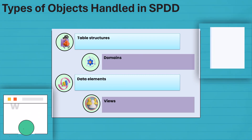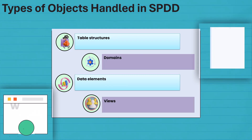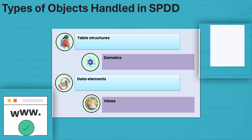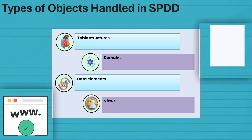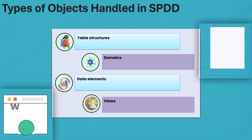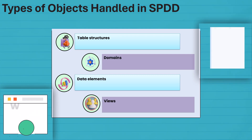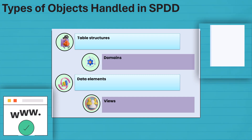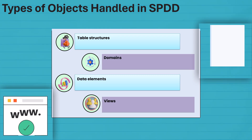SPDD doesn't handle everything — just the VIP objects like tables and data elements. Think of it as the backstage manager making sure the main performers — domains and views — are ready for their post-upgrade show. Let's uncover these star objects and their adjustment journey.